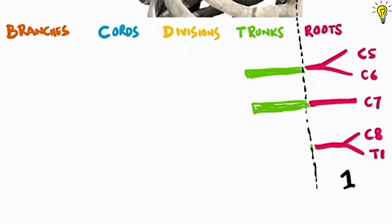Next up is the green colored trunks. So 5 roots combine to form 3 trunks, upper, middle and lower trunks.